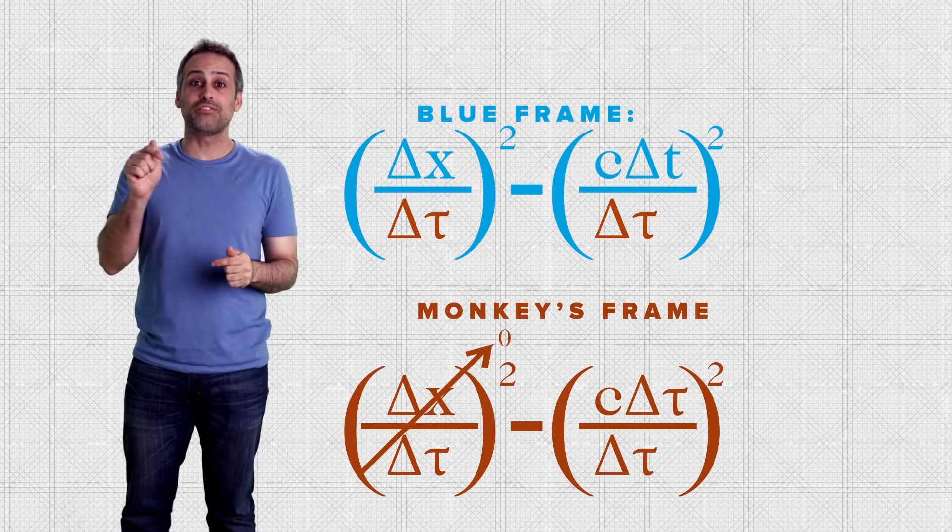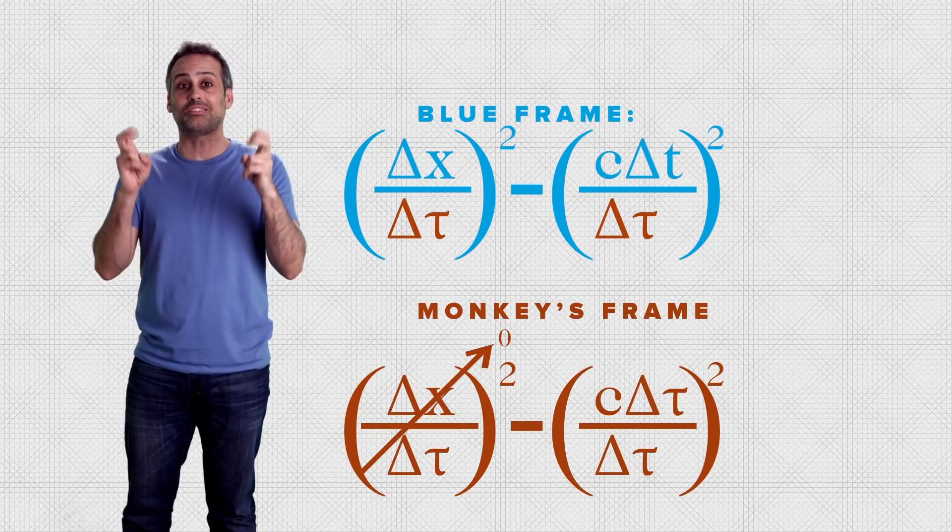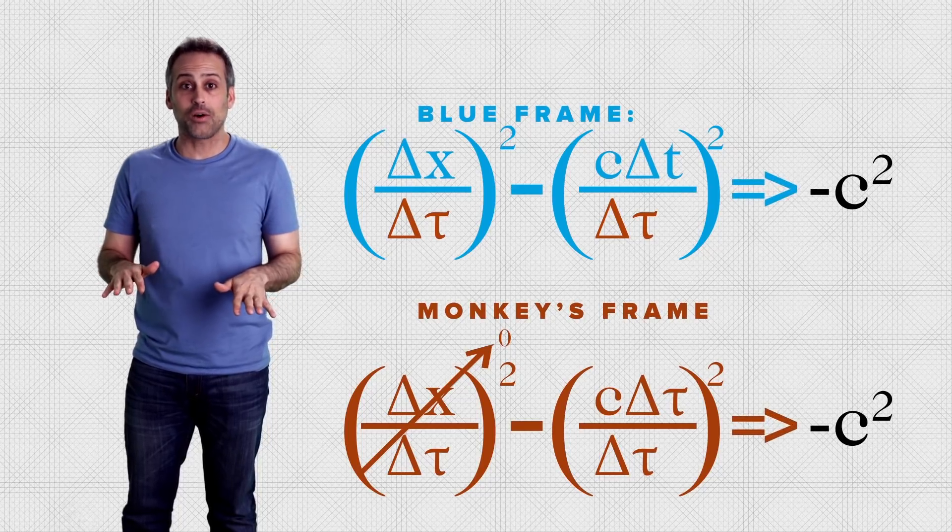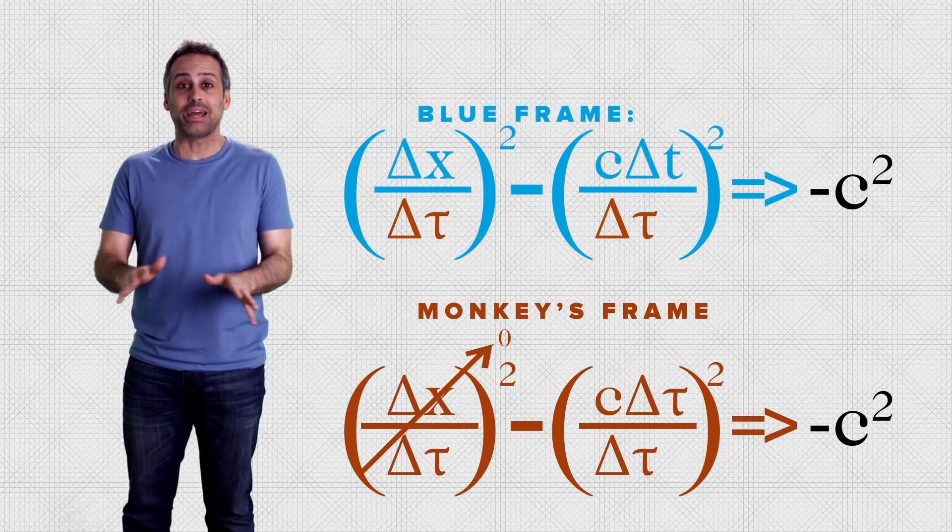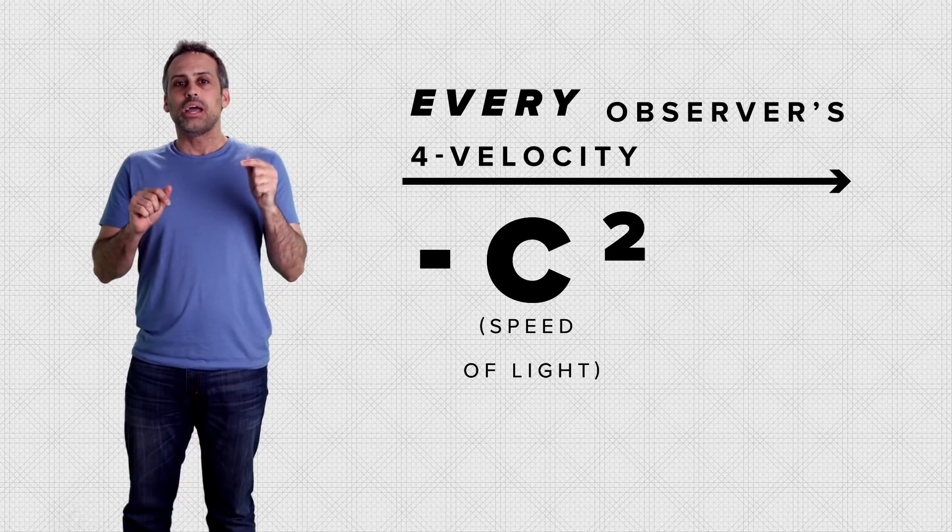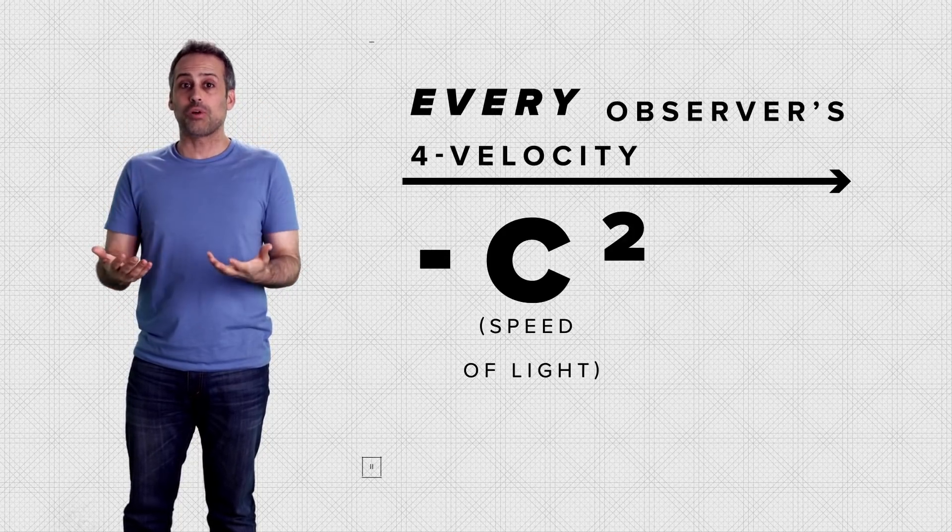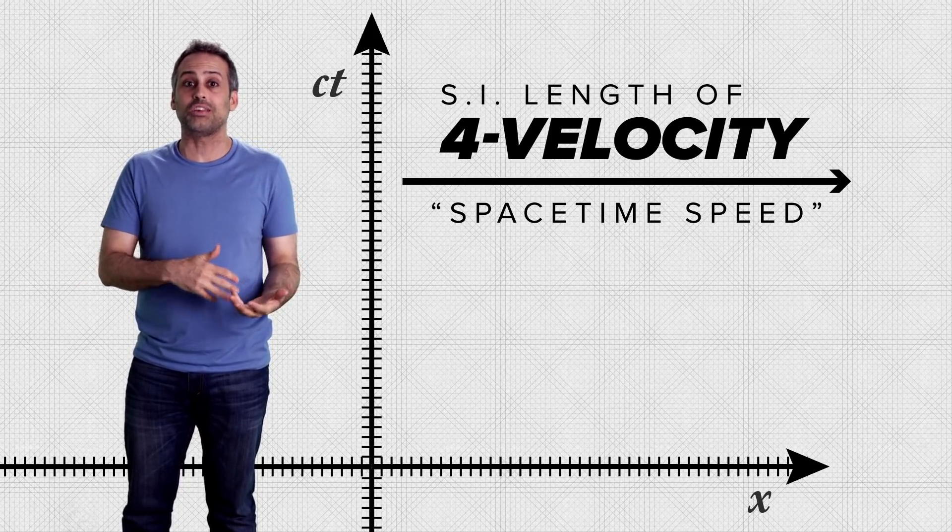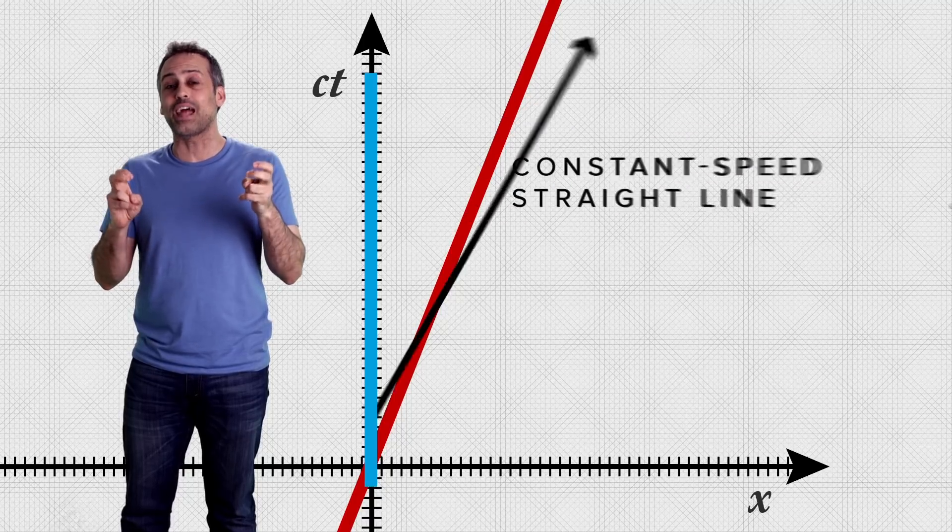And more interestingly, the length of that vector, at least in the sense of spacetime interval length, is minus the speed of light squared. In fact, every observer's four velocity always has a length of minus the speed of light squared, even the accelerating car's four velocity. So if we call the spacetime length of a four velocity vector a spacetime speed.